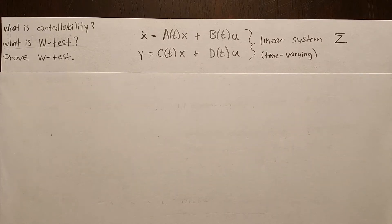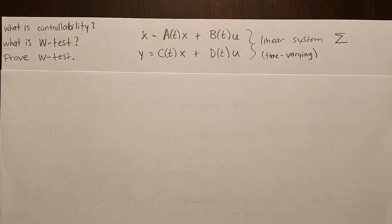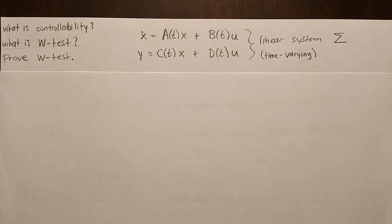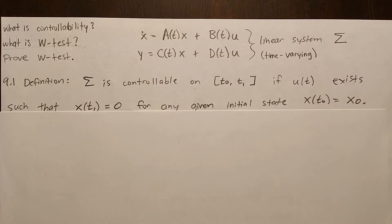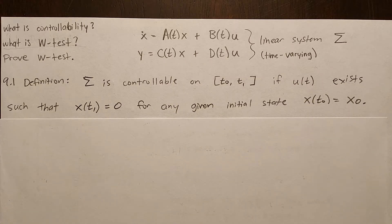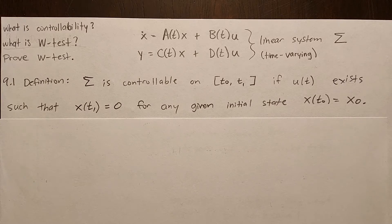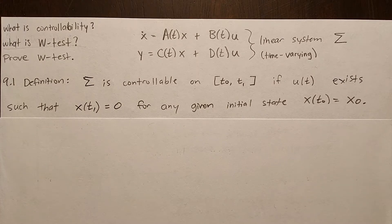We're going to go over what controllability is, what the W test is, and a proof of why the W test works. Suppose we have the linear system sigma, as shown here — it's time varying. The definition of controllability is that sigma is controllable over the interval T0 to T1 if there exists an input signal U(t) such that X(T1) equals 0, for any given initial state X(T0) equals X0.